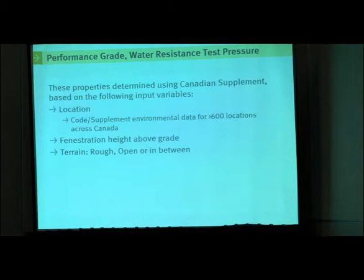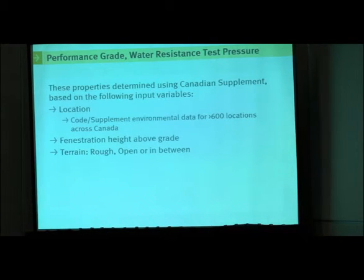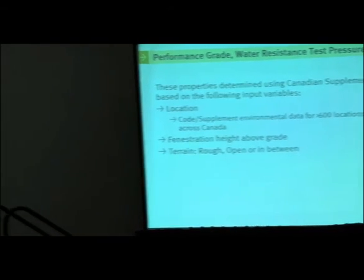The other thing to consider is the terrain: open terrain, rough terrain, or something in between. If you're in open terrain — standing on a flat plain, beside a lake or ocean — there's nothing protecting you from the wind, and you're getting 100% of the wind load. Rough terrain is when you're surrounded by buildings and plantings that break the wind and provide shelter, giving a lower level of wind load structurally or for driving rain. Terrain definition is important for determining the required wind load.